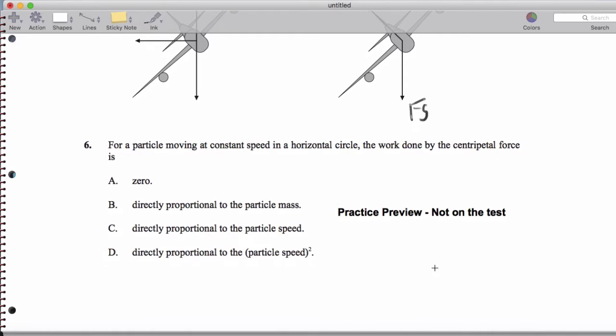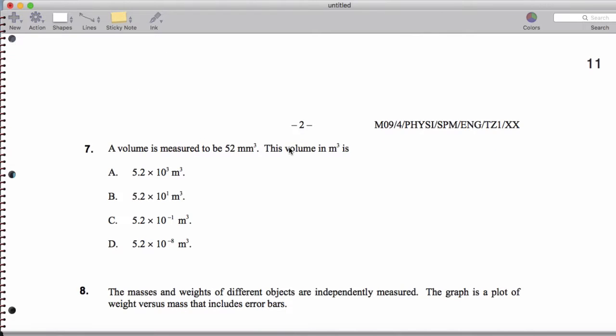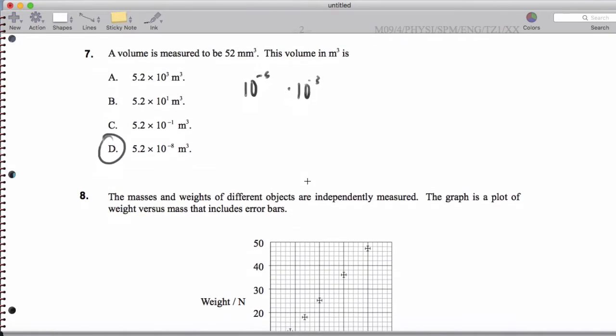And then this is something for later. So it turns out work is the change in kinetic energy. And since we're moving at a constant speed, the work done is zero. I wouldn't put that on the test. And then if volume is measured in millimeters and we want meters cubed, that's going to be 10 to the negative 3 meters times 10 to the negative 3 meters. So that's going to end up being on the order of 5.2 times 10 to the negative 8 meters.